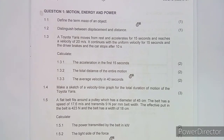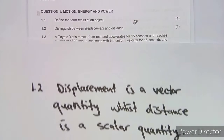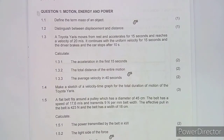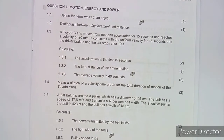Next, distinguish between displacement and distance. The difference is that displacement is a vector quantity, while distance is a scalar quantity. For distance, we just talk about the magnitude — for example, five metres with no direction involved.